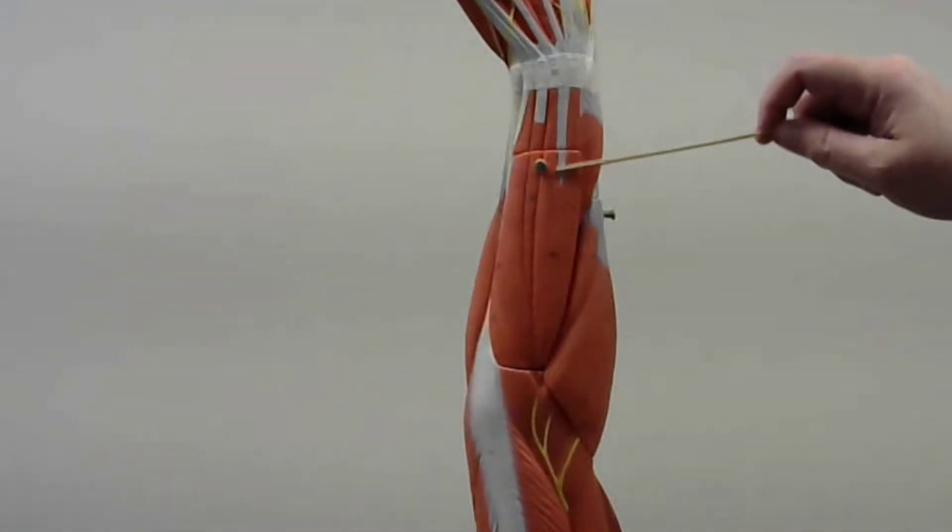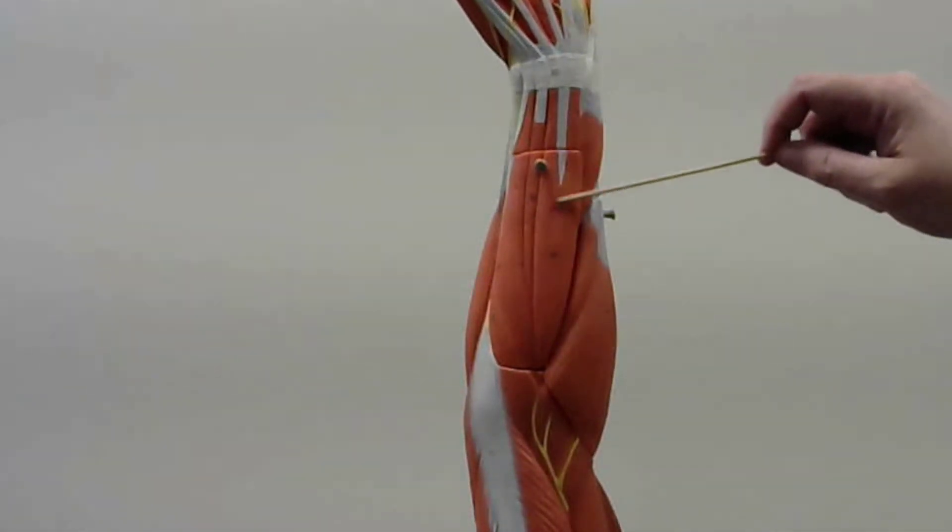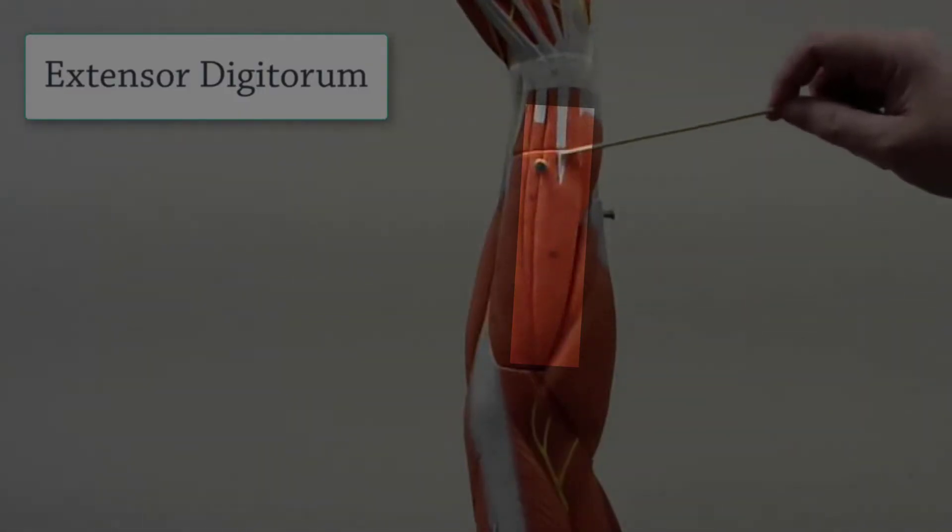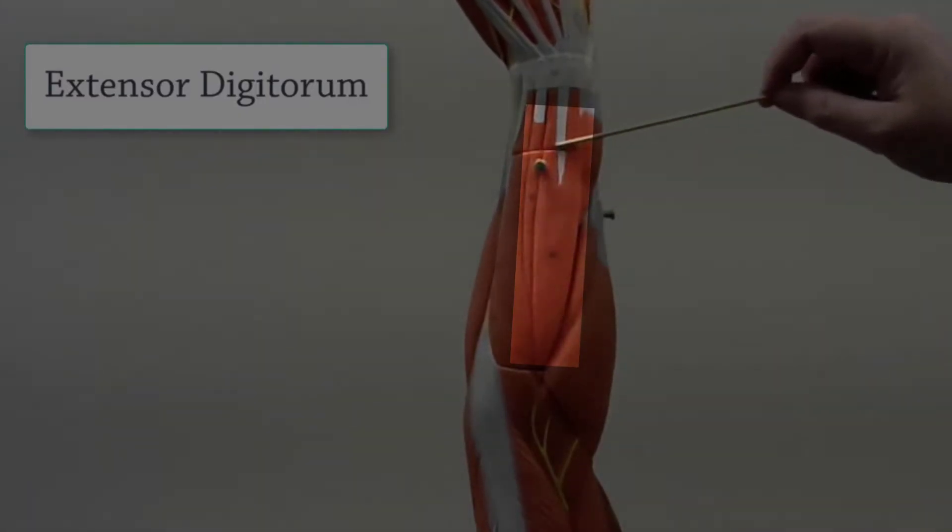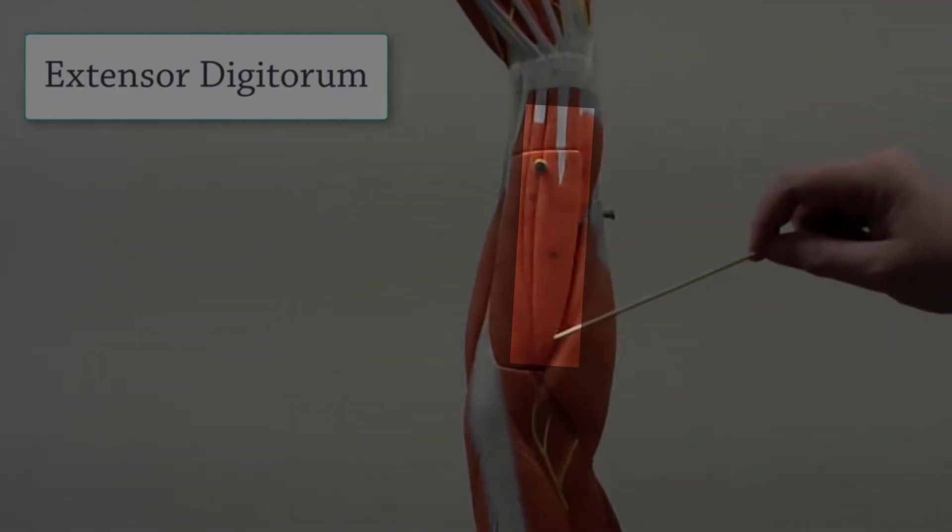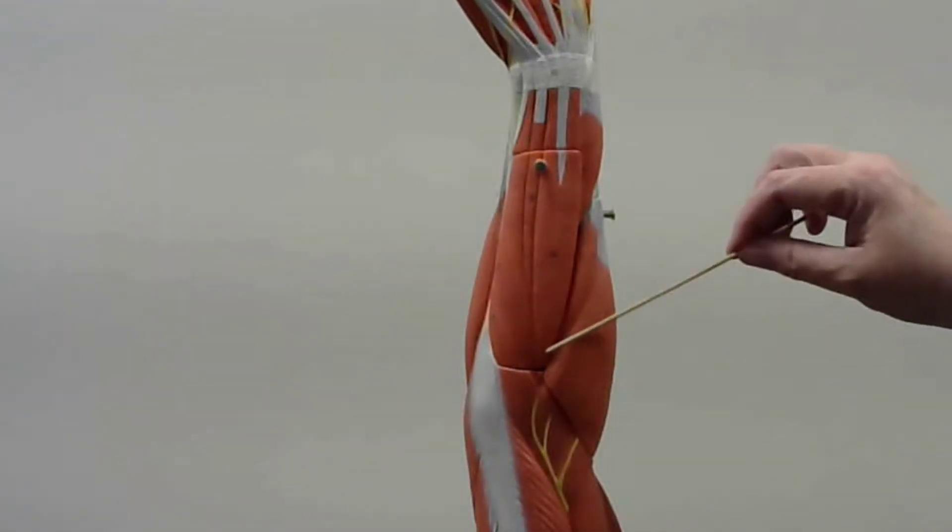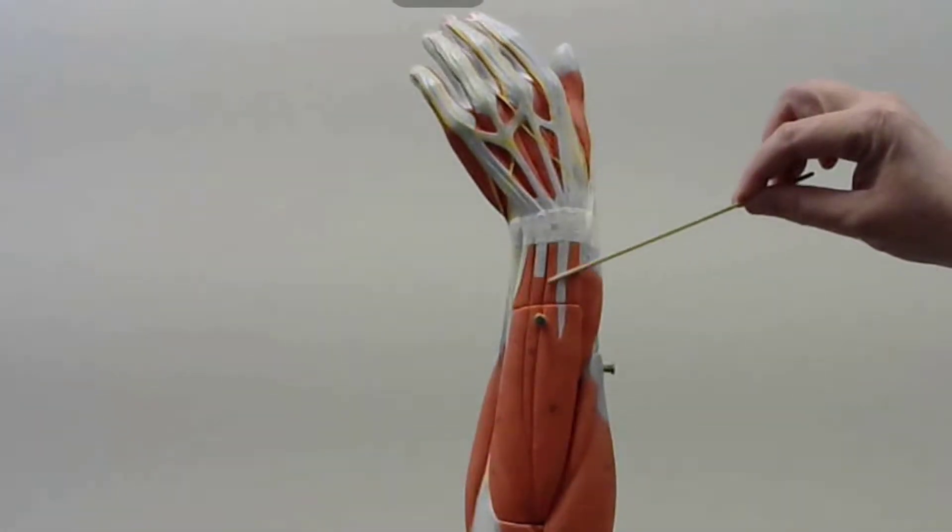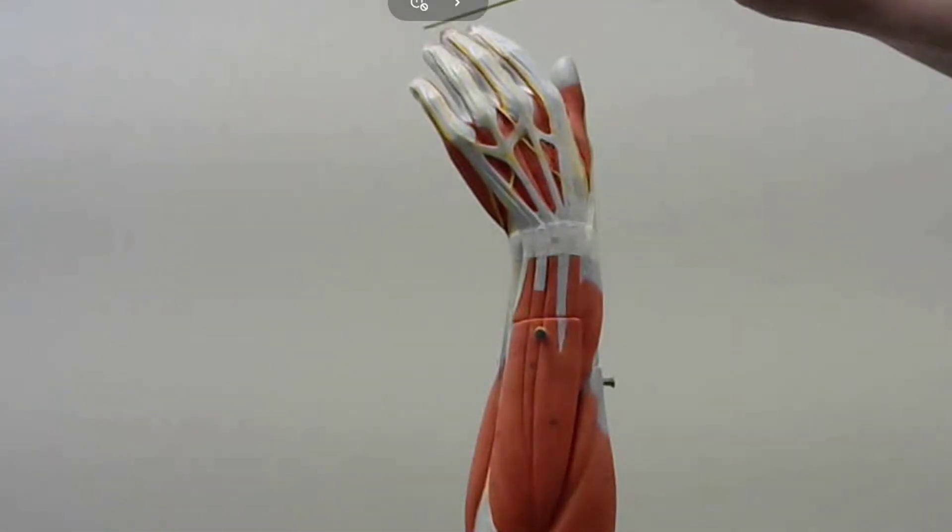This is the extensor digitorum, which is basically right on the back of the arm. And if you were to follow it, it's basically going to lead you to your middle fingers.